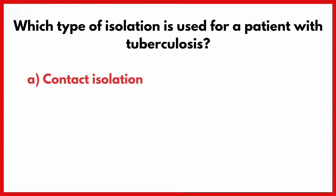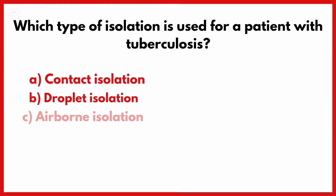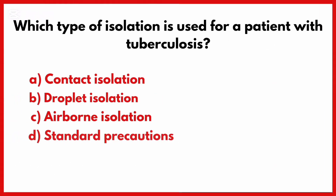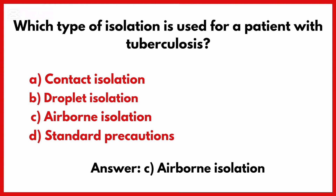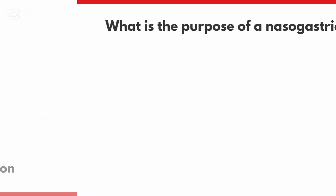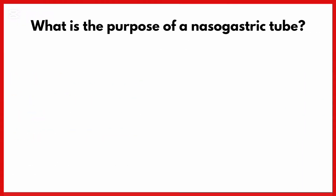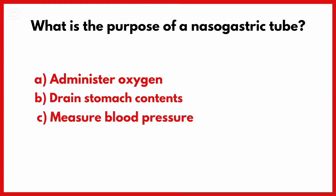Which type of isolation is used for a patient with tuberculosis? Correct answer is option C: Airborne isolation. What is the purpose of a nasogastric tube?